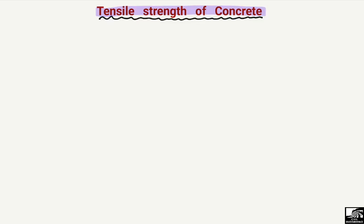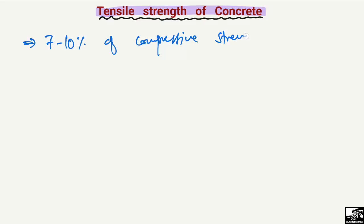As we know, concrete is a material that has high compressive strength but low tensile strength. In most cases, the tensile strength of concrete is only seven to ten percent of the compressive strength.